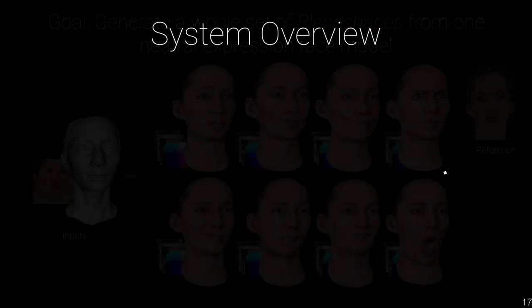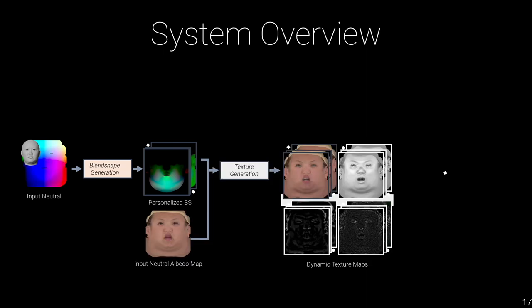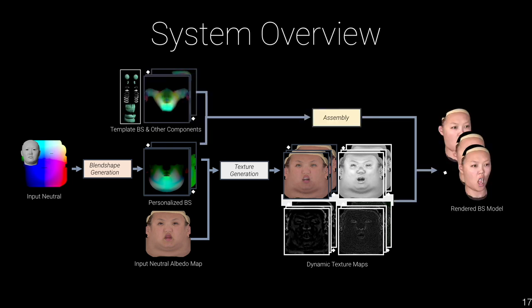Our system has three steps. First, we generate blend shape geometry from neutral geometry using unsupervised learning. Then, the generated blend shapes together with neutral albedo are input to a texture generation network to infer corresponding maps. In the meanwhile, eyes, teeth, and other parts are modeled by linear PCA. We finally get the whole set of personalized blend shapes for the input subject.